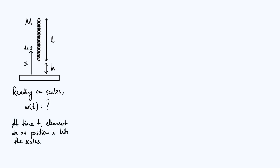A technique that's often helpful with problems like this — when you have something like a chain which is not a rigid body because it doesn't keep a fixed shape — is to split your object into infinitely many infinitesimally small elements, because then you can just treat each small element as a particle, and we know how particles behave. I've defined a couple more symbols on my diagram: x is a vertical coordinate measured from the surface of the scales that tells you how far above the scales any particular element of the chain is, and dx is a small increment in x — it tells us how long the element of chain we're considering at a particular moment is.